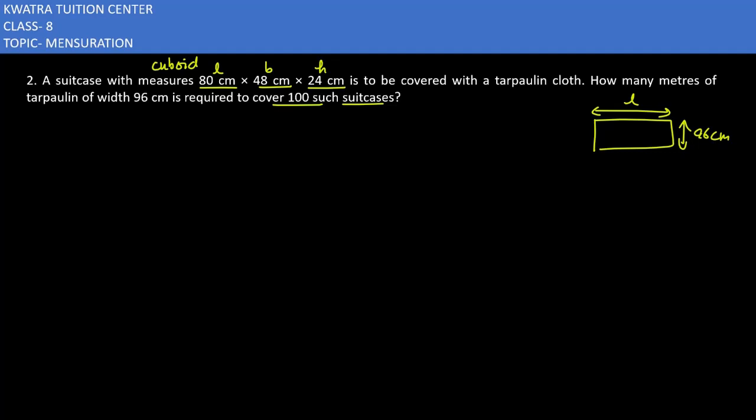So first we will find the total surface area of one suitcase. The total surface area of the suitcase is 2(LB + BH + HL). L value substitute 80 cm, B value substitute 48 cm, H is 24 cm.